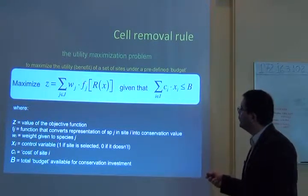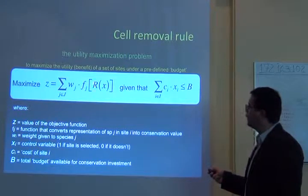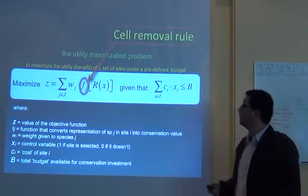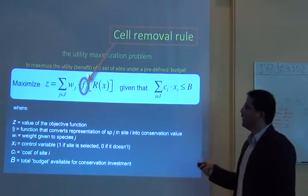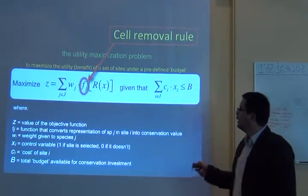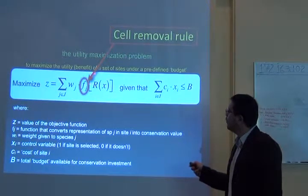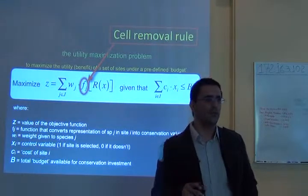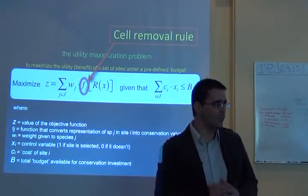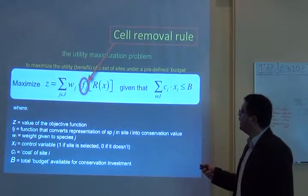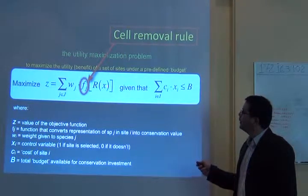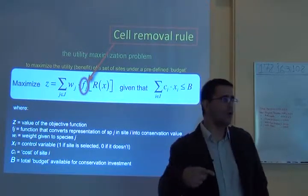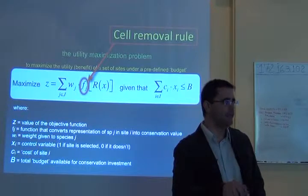How can I use this? The function transforms representation into some kind of conservation value — that function is the removal rule. If you're using core area zonation, it transforms representation into a value that gives more weight to species with small distributions. If you're using additive benefit function, it converts representation levels into a summed value of conservation importance for each cell.